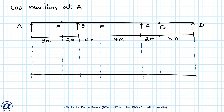Let's draw the influence line diagram for support reaction at A using Müller-Breslau principle. At A we have the vertical support reaction. To draw the influence line diagram we release the vertical displacement degree of freedom at A and give a unit displacement to point A. Point A moves up by 1 unit. Because we have roller supports at B, C and D, the vertical displacements at points B, C and D will be zero.